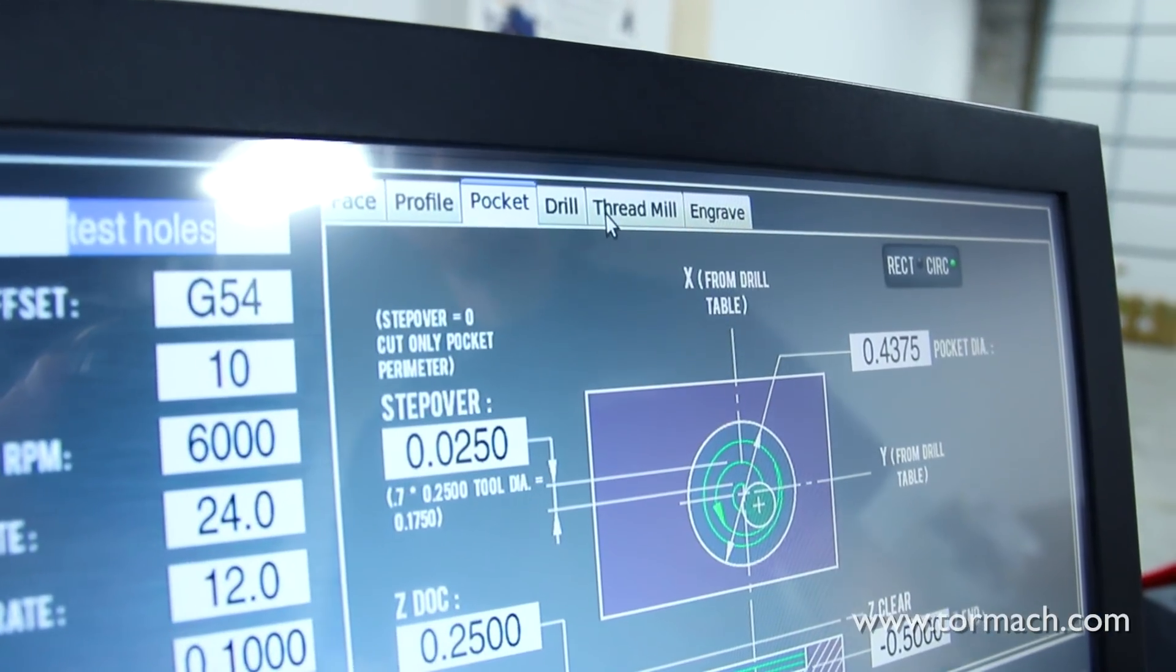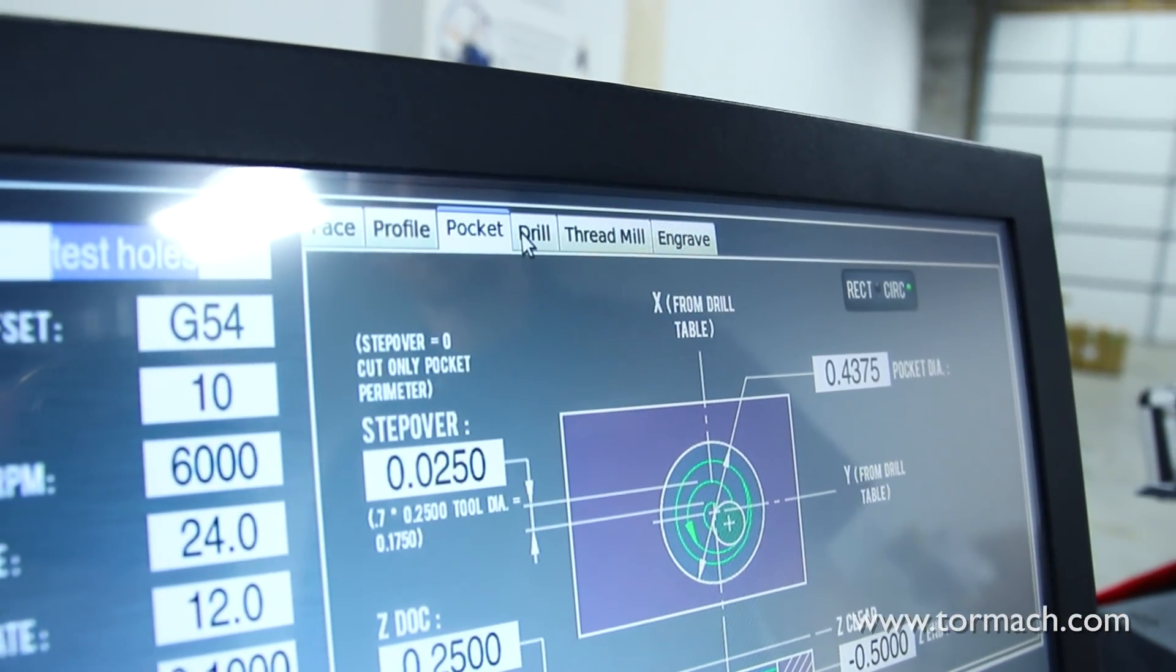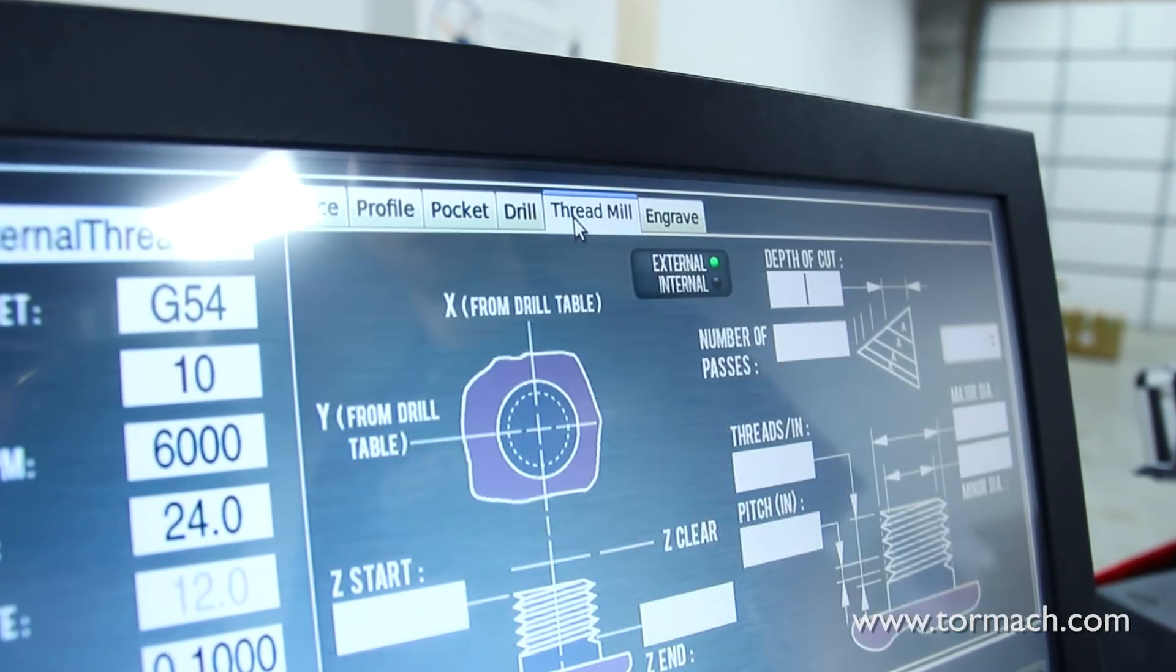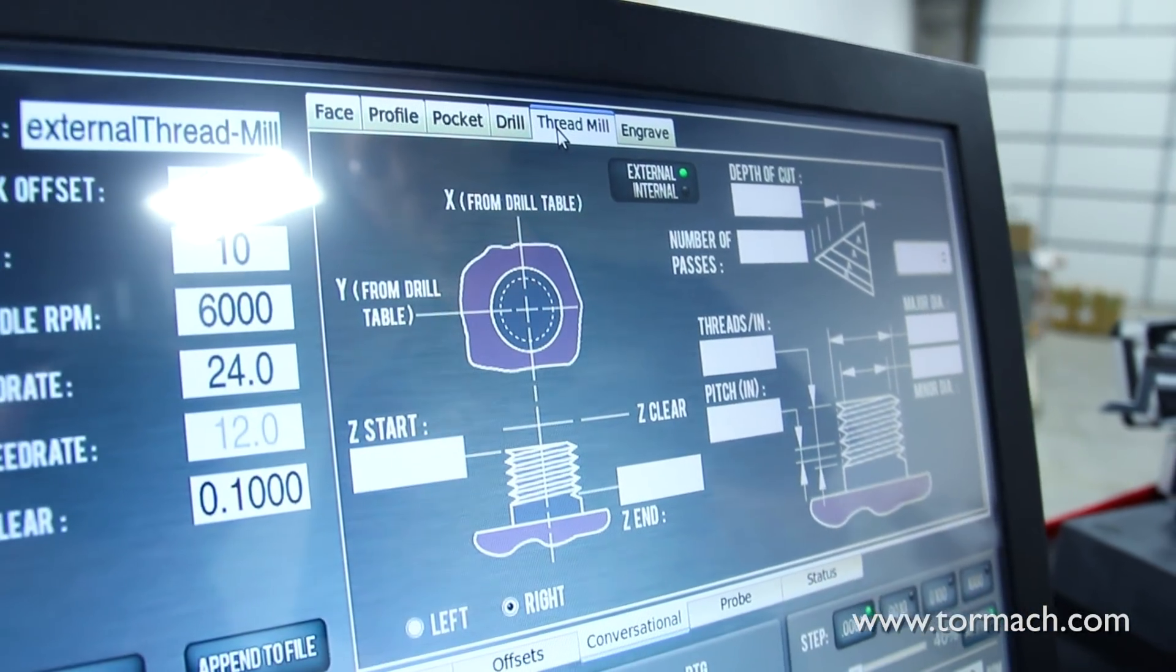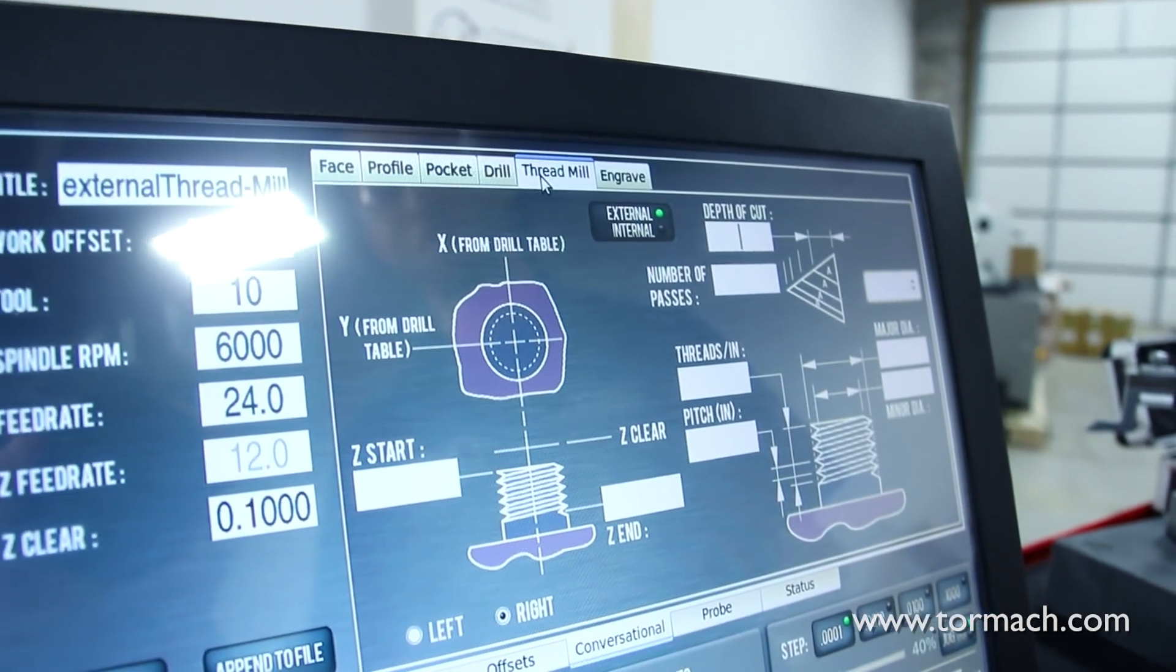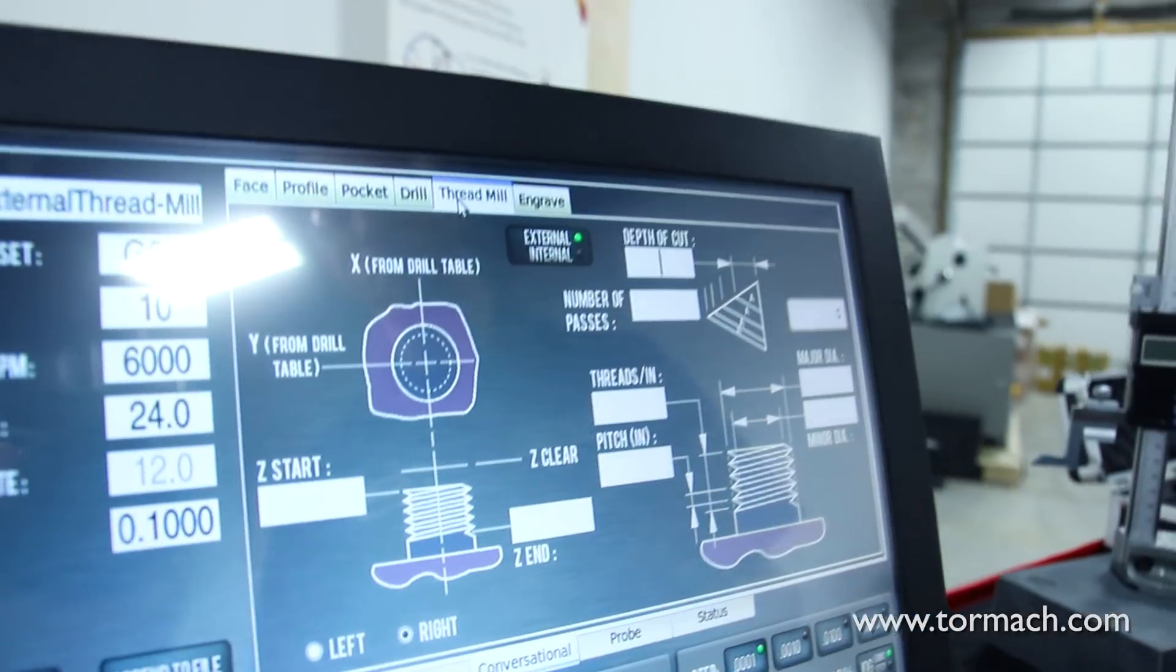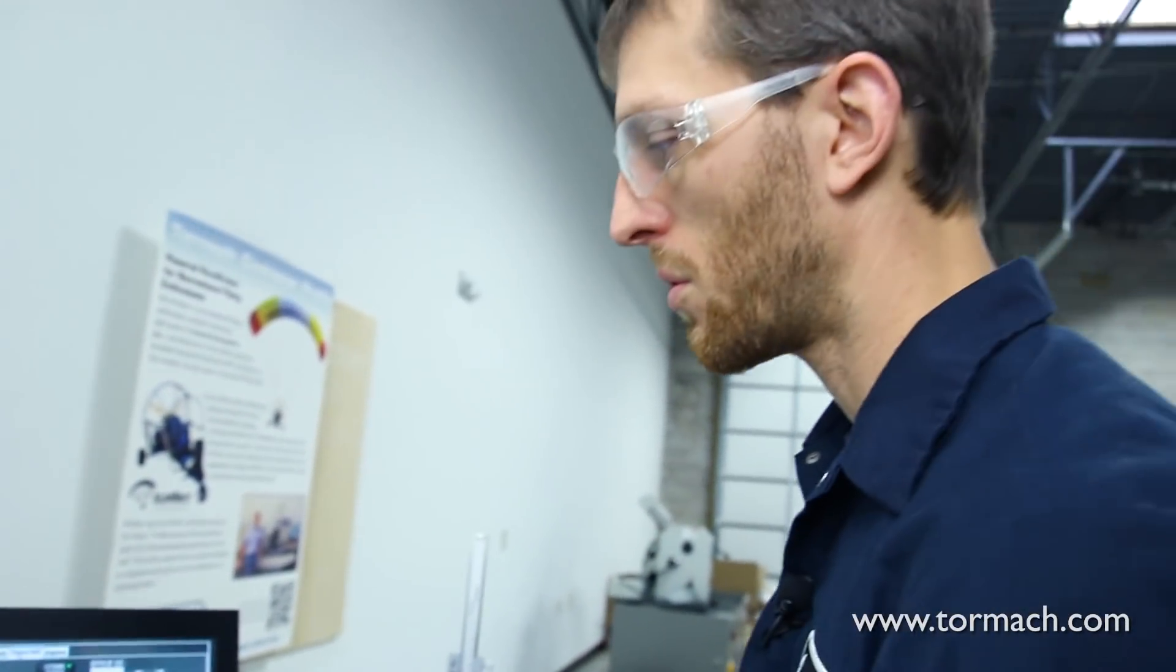We'll jump back to our conversational screen. Instead of using a pocketing routine, I like to use a thread milling cycle. I like that helical entry pass. When you're using a tool that's less than or greater than half the diameter of your hole, you can just put it all in one pass anyways. What I like to do is just use a thread milling cycle.